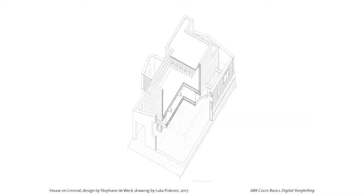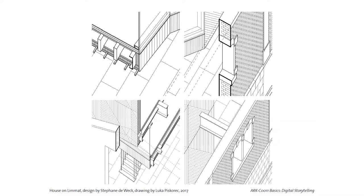Starting with the building scale: this drawing is what's called a cut axonometry — a structural drawing where you cut the building to show how things are built or how they look from inside. It's a combination of realism and technical drawing.